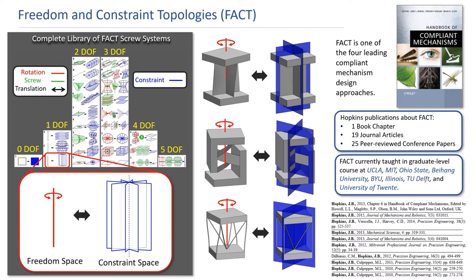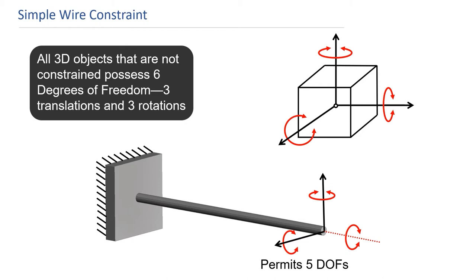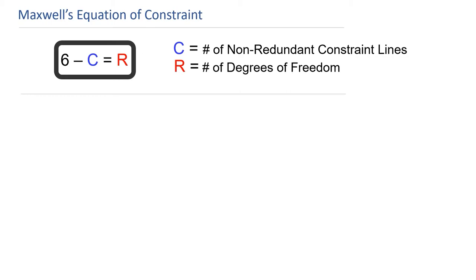To understand how FACT can be applied to the design of architected materials, it's important that I first teach a short mini tutorial about its fundamental principles. All 3D objects that are not constrained possess six degrees of freedom: three rotations and three translations. These degrees of freedom can be eliminated by attaching flexible constraints to the object. The simplest flexible constraint is a wire flexure. Wire flexures stiffly constrain bodies along their axes while freely allowing compliant deformations in all other directions. James Clerk Maxwell first recognized that each non-redundant constraint added to a body removes one of its six degrees of freedom, introducing the equation: six minus the number of non-redundant constraint lines equals the number of degrees of freedom.